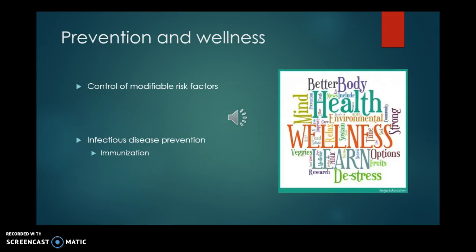When taking care of your immune system, some of it is controlling modifiable risk factors — making sure you're eating things that support immunity and not becoming too fatigued, since stress decreases your immune response. Prevention of infectious diseases through immunization and hand-washing are also key. Hand-washing is often overlooked, but it's the single best thing you can do to prevent the spread of infectious diseases.